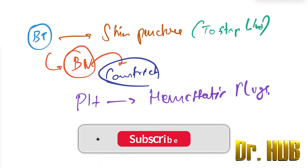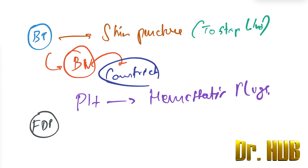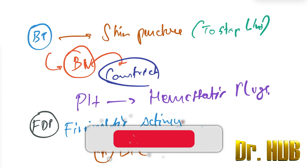Finally, FDP stands for Fibrin Degradation Products. FDP is used to monitor fibrinolytic activity, and levels are increased in DIC. In this video we discussed the parameters of the coagulation pathways, including Prothrombin Time, APTT, Thrombin Time, and Bleeding Time. Please subscribe to learn and grow daily.